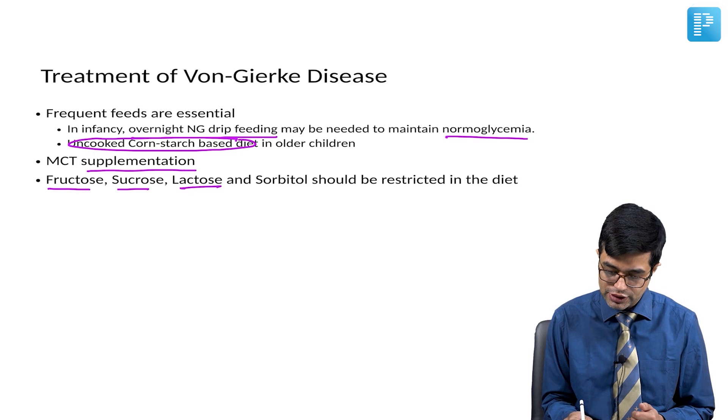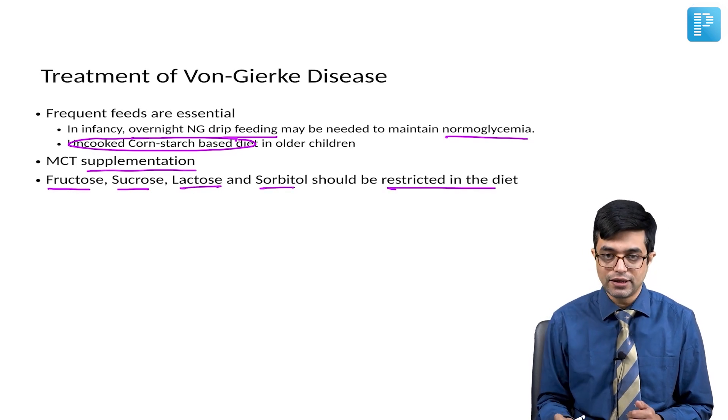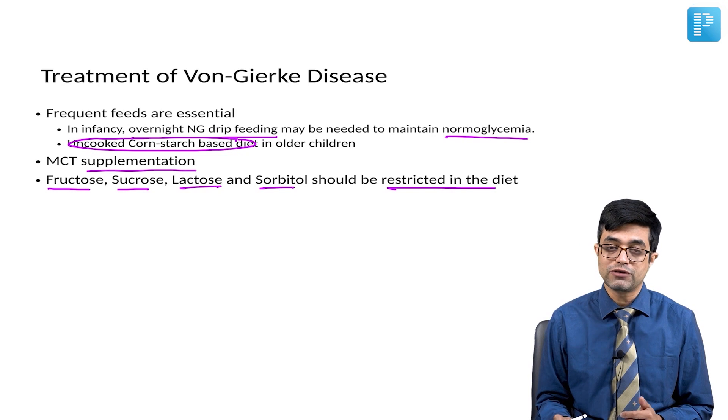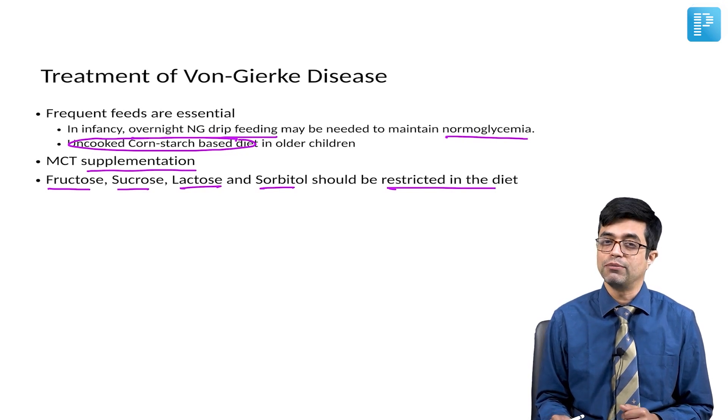Fructose, sucrose, lactose, and sorbitol should be restricted in the diet because their metabolism is also affected. Glucose 6-phosphatase is involved in their metabolism as well.